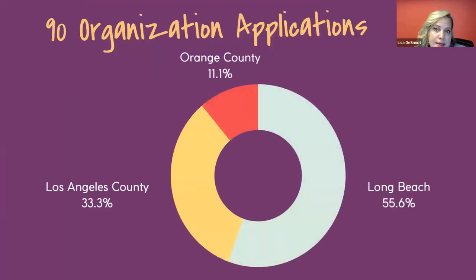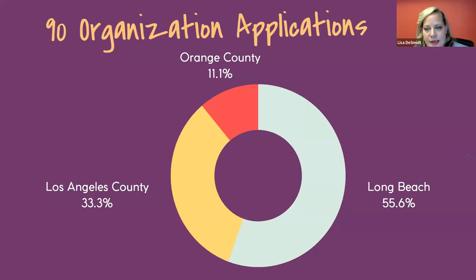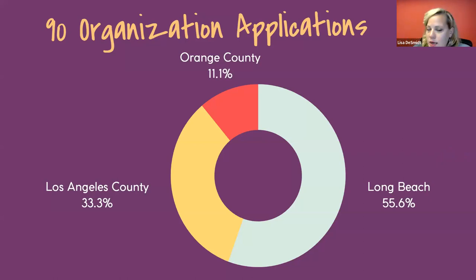We received 90 organization applications: 55% were from Long Beach, 11% from Orange County, and 33% from Los Angeles County greater, excluding Long Beach. No organizations have been selected at this point — we anticipate in early May being able to announce those to the organizations.